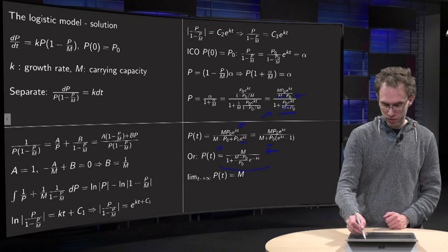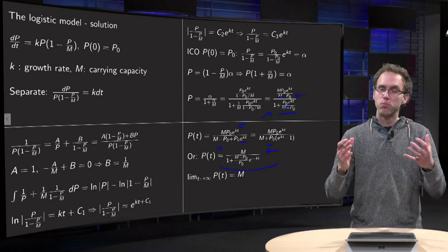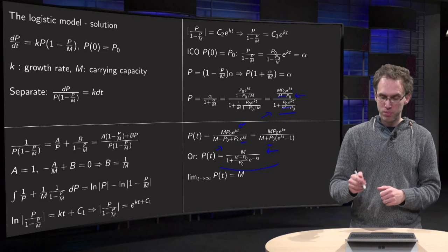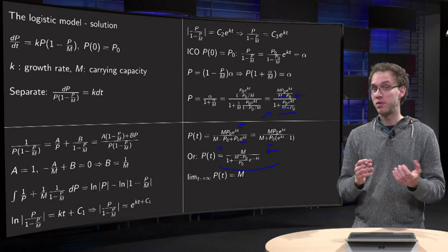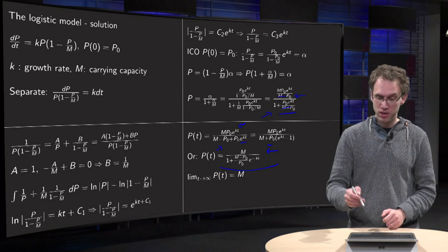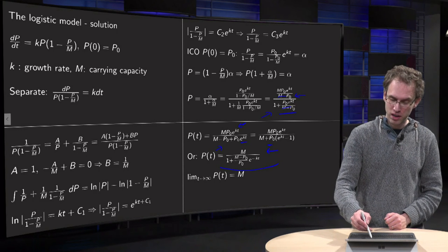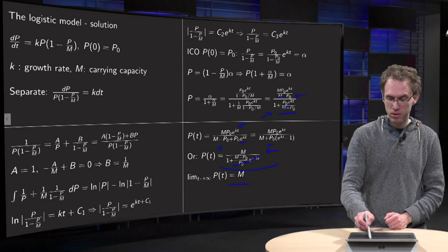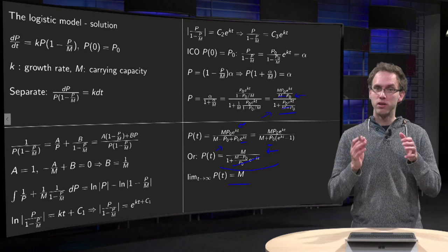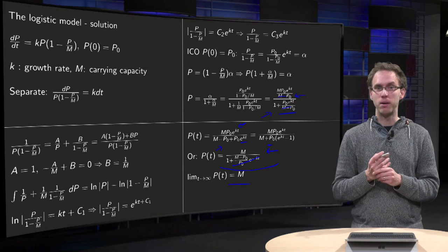Why is this second formula more convenient? Well, from the second formula you can easily see what happens if t goes to infinity. If t goes to infinity, your e to the power minus kt will cancel out, and you'll get for t to infinity that your population approaches capital M.